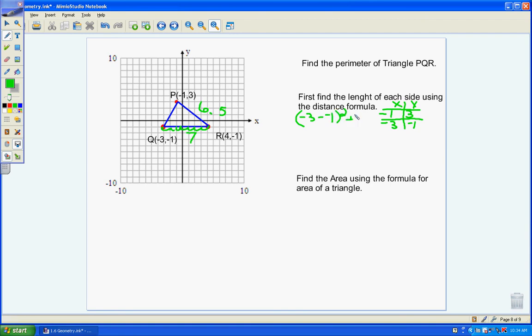plus -1 minus 3 squared. So we would have negative 2 squared plus negative 4 squared, or 4 plus 16, which is 20. And the square root of 20 is approximately 4.5.